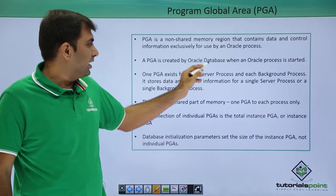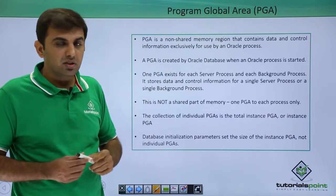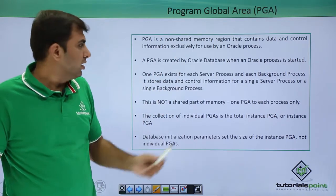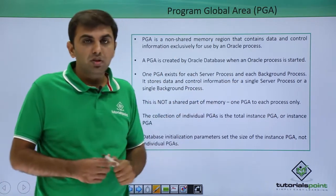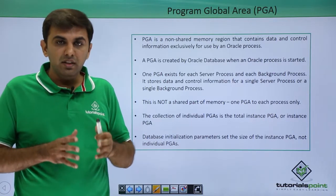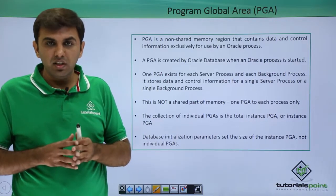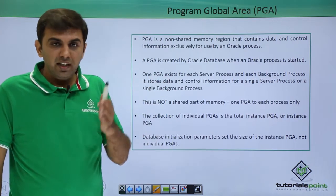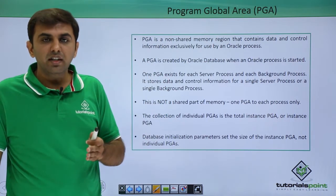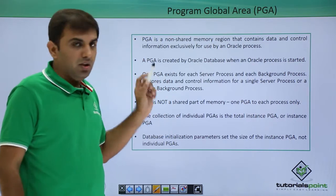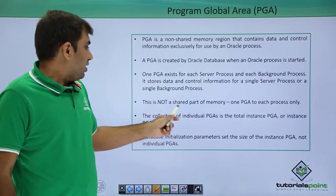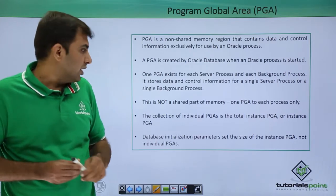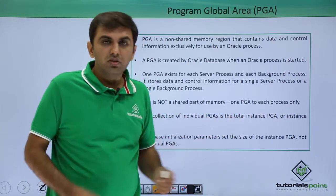A PGA is created by Oracle database when the Oracle process is started. One PGA exists for each server process and each background process. So if you have 10 background processes, 10 PGAs are allocated. If you have 10 users connected to the database, 10 server processes are there and 10 PGAs are allocated. This is not a shared part of memory — it is a non-shareable object, so one PGA per process only.